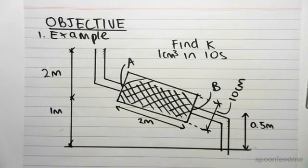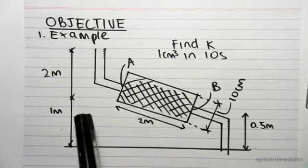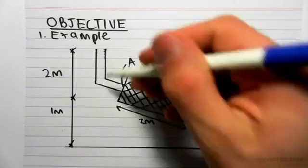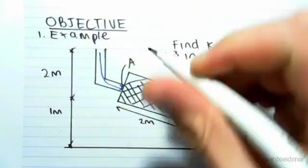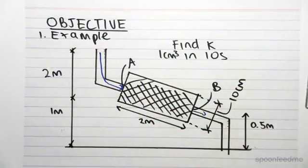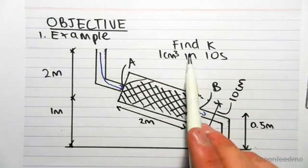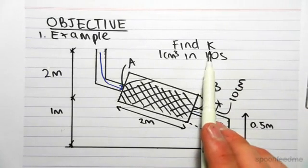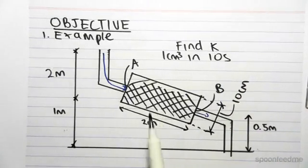In this question, we have a contraption set up in a lab. Water flows through these tubes, through a sample of soil, and out the other end. We're going to use this contraption to find k, the coefficient of proportionality of this soil.